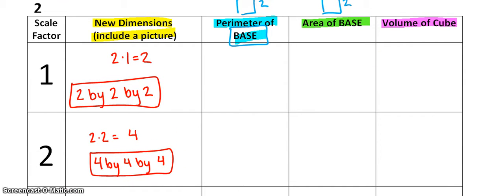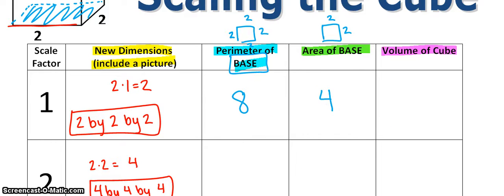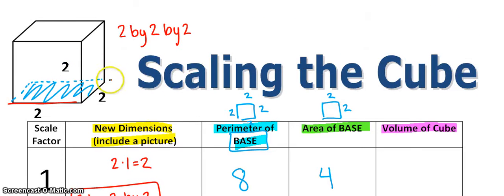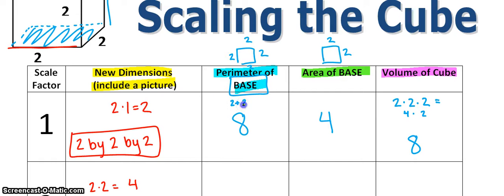If you're going to find the perimeter of the base, the base is a 2 by 2 square, so all sides are 2. Perimeter is when you add up all the sides: 2 plus 2 plus 2 plus 2 — the perimeter would be 8. The area, you take base times height, which is 2 times 2, which is 4. And the volume, you take the area of the base — which is 4 — and multiply it by the height, which is 2. So the volume is 2 times 2 times 2, which is 8.